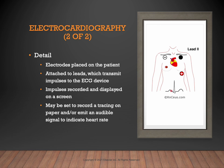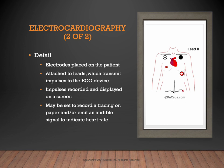An easy way to remember lead placement is 'white on the right, smoke over fire.' The white lead is placed on the patient's right side just below the clavicle, the black lead on the patient's left side just below the clavicle, and the red lead also on the left but below the black one. Prior to placement, make sure the skin is clean, dry, and free of breaks. After leads are placed, the heart's electrical activity is recorded and displayed on a monitor, often with an audible beeping sound indicating heart rate.